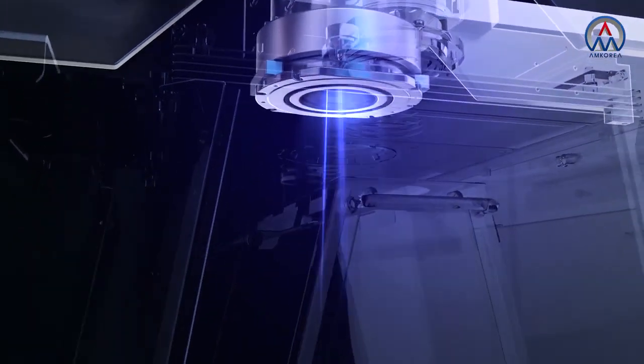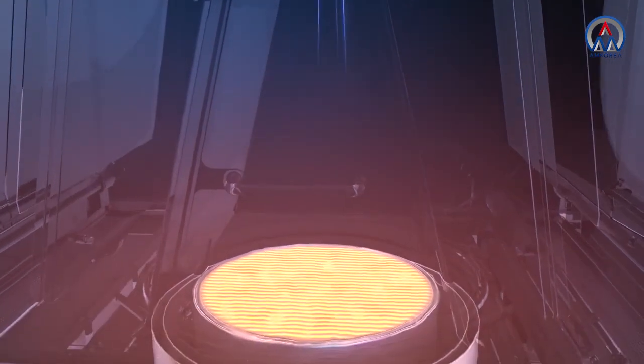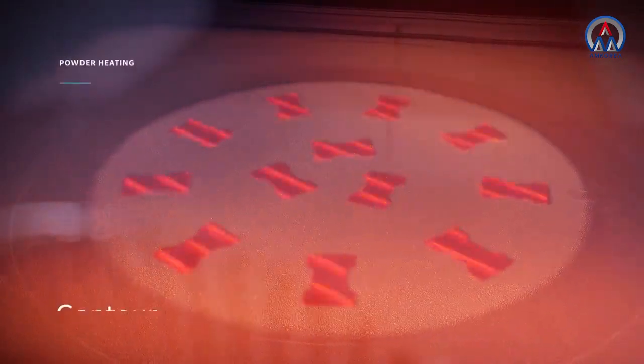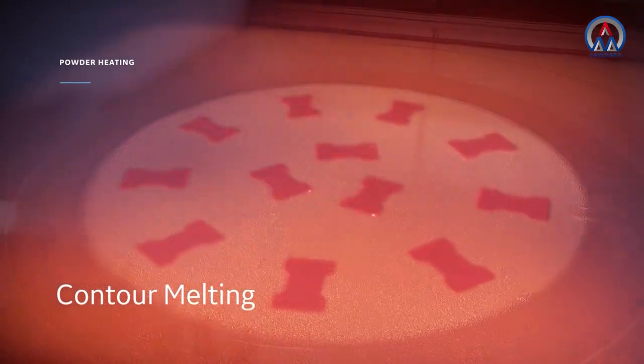A powerful six kilowatt electron beam heats the powder bed to the optimal ambient temperature and then proceeds to melt the powder, first contour melting and then hatch melting.